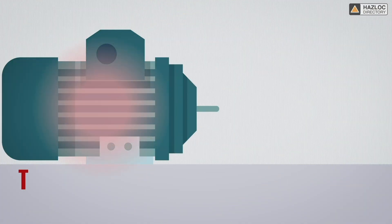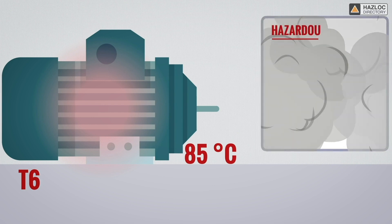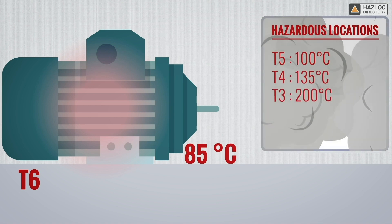All equipment with a T6 rating which has a maximum surface temperature of 85 degrees Celsius can be also used in T5, T4, T3, T2, and T1 environments.